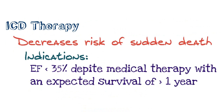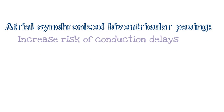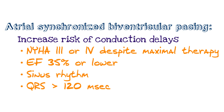Consider if patients need ICD therapy. Patients with significant heart failure are at higher risk of sudden cardiac death because ventricular arrhythmias are much more probable. Indications for placing a defibrillator are: EF less than 35% despite maximal medical therapy, and expected survival greater than one year. Atrial synchronized biventricular pacing has a different set of indications — used because of increased risk of conduction delays with very severe heart failure. Criteria include NYHA class 3 or 4 despite maximal therapy, EF of 35% or lower, sinus rhythm, and QRS complex greater than 120 milliseconds.